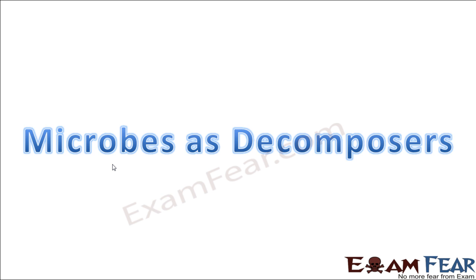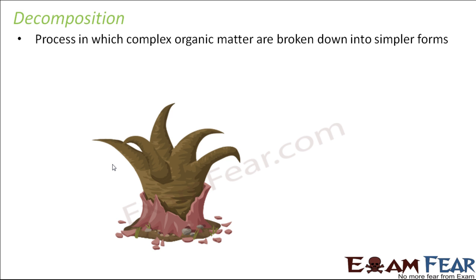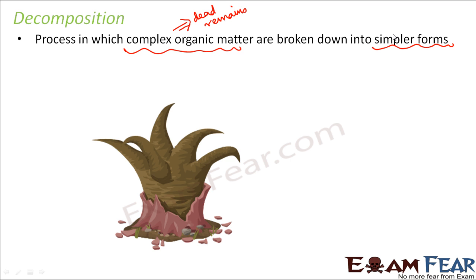What is decomposition? Composition means formation — we often say this is composed of this and this, meaning it is made up of something. Decomposition is just the opposite of that — it means breaking something. So this is the process in which complex organic matter is broken down into simpler forms. The complex organic matter is nothing but the dead remains of plants and animals, which are carbon-containing substances.